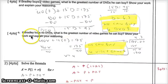Question 1c. If Bradley buys no DVDs, what is the greatest number of video games he can buy? Show your work and explain your reasoning. No DVDs means D is equal to 0.